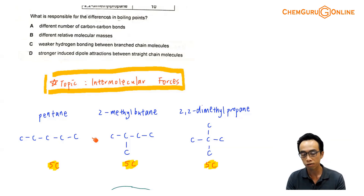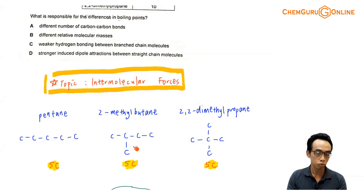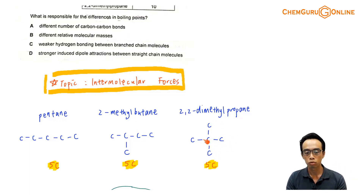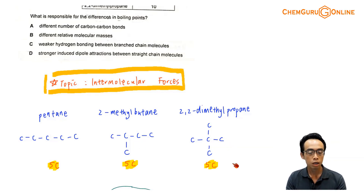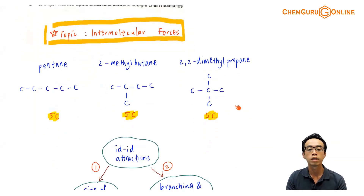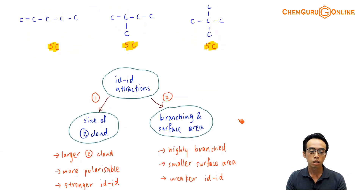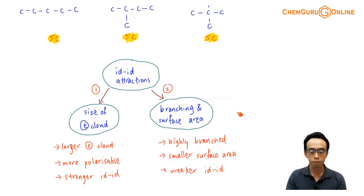Pentane is a straight chain with 5 carbons. 2-methylbutane has a longest chain of 4 carbons with a methyl group at position 2. Then 2,2-dimethylpropane has 3 carbons with 2 methyl groups both at carbon position 2. So they have 5 carbons in total and can be called chain isomers of each other.